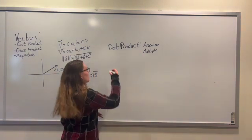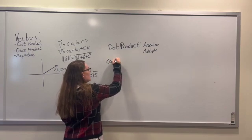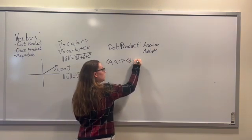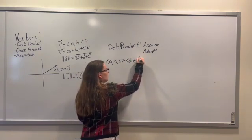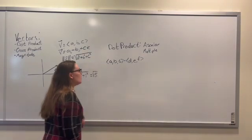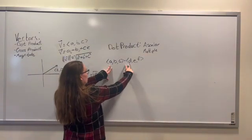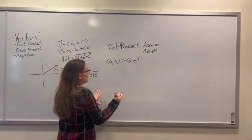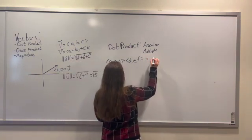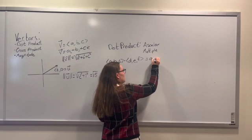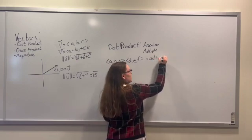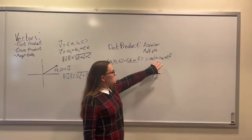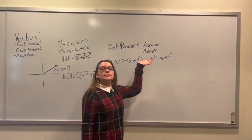So to find the dot product of two vectors, let's say A, B, C dot D, E, F. We multiply the corresponding first, second, and third values together, and then add them together. So this is equal to A D plus B E plus C F. Because each of these are just numbers that we're adding together, we're going to get a number at the end, a scalar multiple.